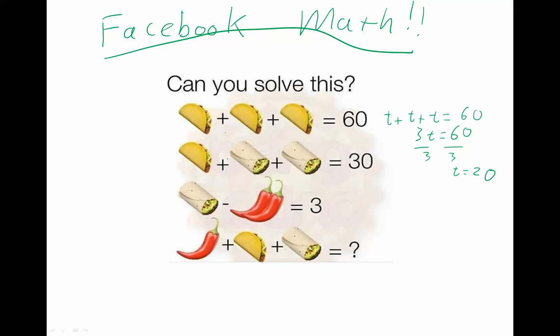So going into this next equation where we have taco, burrito, burrito, we don't know burritos yet, but we know that taco is 20. So I'm going to use a replacement and replace that. And that's 2 burritos. We're going to call that b this time. Now we can solve this equation.